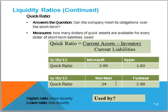Look at Walmart — for every dollar in current liabilities, they only have 24 cents in quick assets. Very low. Fastenal, still, for every dollar in current liabilities, has $2.88 in quick assets — very strong in liquidity. This ratio is used by vendors who want to know if they will be paid on time, and also by management to help them determine whether they have enough liquidity or not.